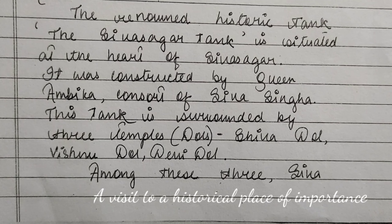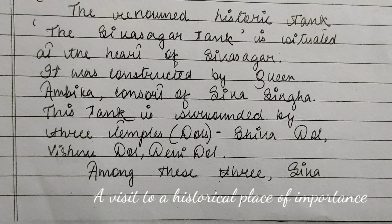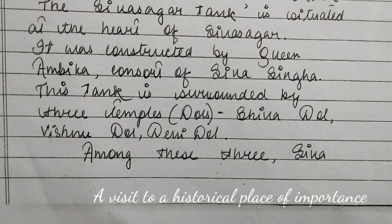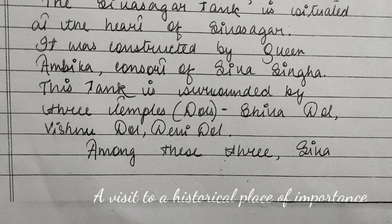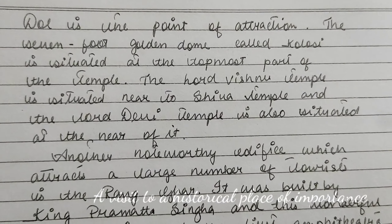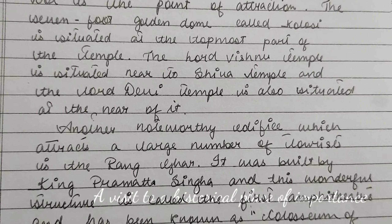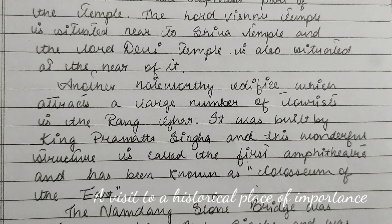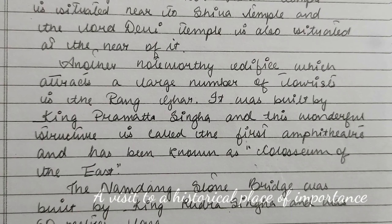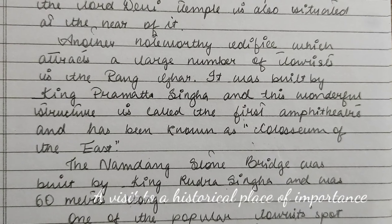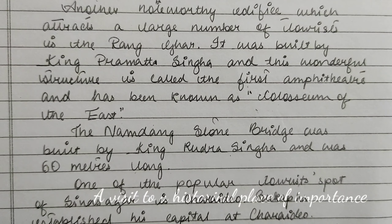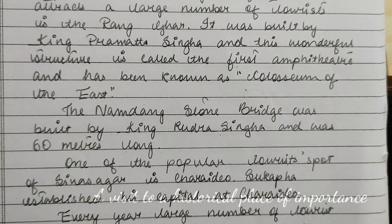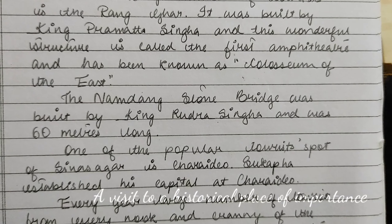The Sivsagar Tank was constructed by Queen Ambika, consort of Shiva Singha. This tank is surrounded by three temples — Shiva Dol, Vishnu Dol, and Devi Dol. Among these three, Shiva Dol is the main point of attraction. The seven-foot golden dome called Kalasi is situated at the topmost part of the temple. The Vishnu temple is situated near the Shiva temple, and the Devi temple is situated nearby. Another noteworthy edifice attracting tourists is the Ranghar, built by King Pramatha Singha.